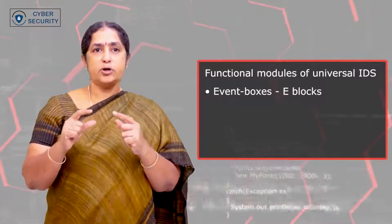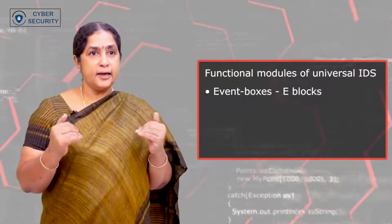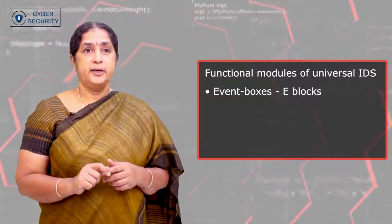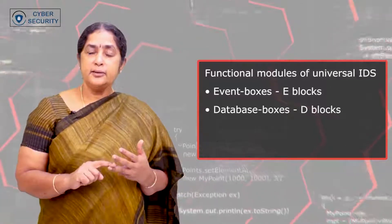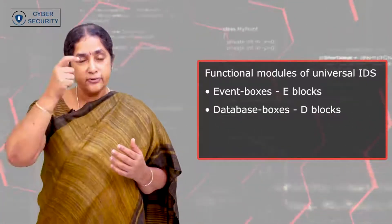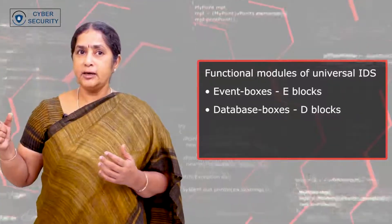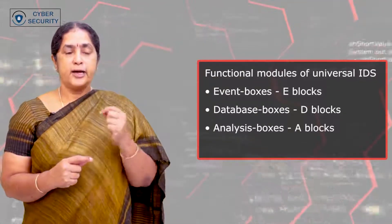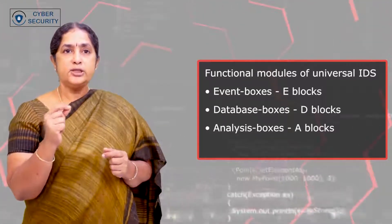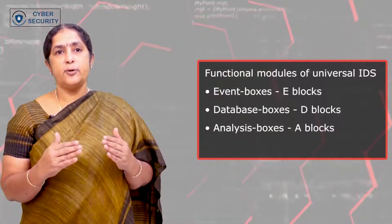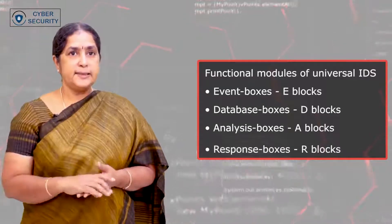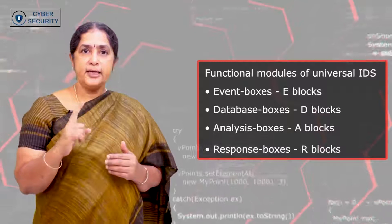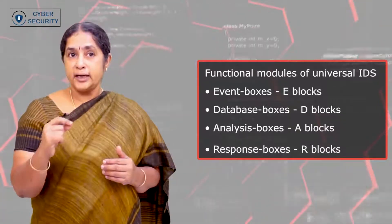The E-block consists of sensor elements that track the target system and acquire events to be analyzed by other blocks. The database boxes, or D-blocks, store information from the E-blocks for subsequent processing by A or R blocks. The A-block processes modules for analyzing events and detecting potential hostile behavior to generate notifications if necessary. The R-block's main function is execution — if any intrusion occurs, it responds to the detected threat.